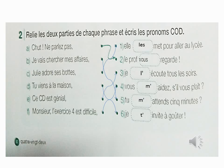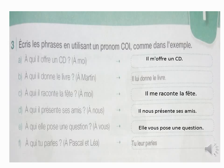Je le goûte tout le soir. Le pronom personnel utilisé est le. La phrase F : on va compléter avec 4. Vous m'aidez, s'il vous plaît ? Page 83 : Écris les phrases en utilisant un pronom C.O.I., comme dans l'exemple.